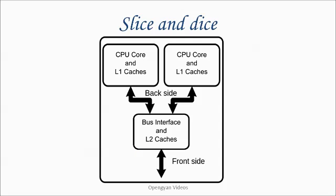Let's see what is there inside a multi-core processor when we slice and dice it. We have two basic building blocks. In a dual-core processor, we have the CPU cores as one block and the caches as the second block. The CPU core along with its L1 caches forms its own block so that whatever data is needed for the CPU at that point in time is there along with the core itself.